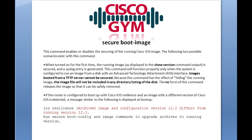This command enables or disables the securing of the running Cisco IOS image. There are two possible scenarios. The first scenario is just turning it on for the first time — when you do that, it's going to take the running image as displayed in the show version command output, secure it, and create a syslog message. You have to have an ATA disk like a flash card, and you can't have images being booted from a TFTP server — they have to be locally stored. Because this command has the effect of hiding the running image, the image file will not be included in any directory listing of the disk.